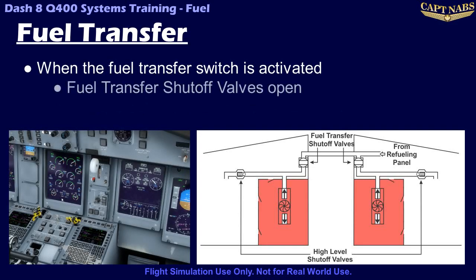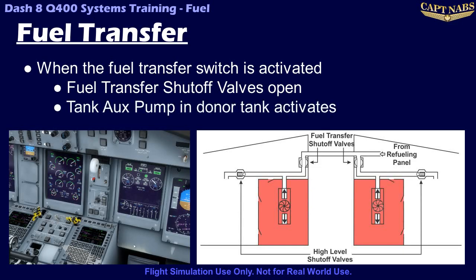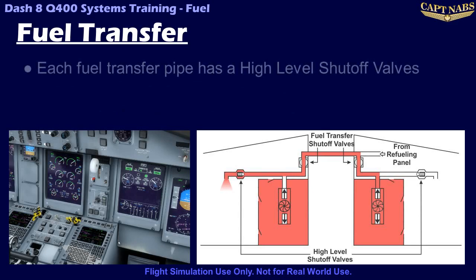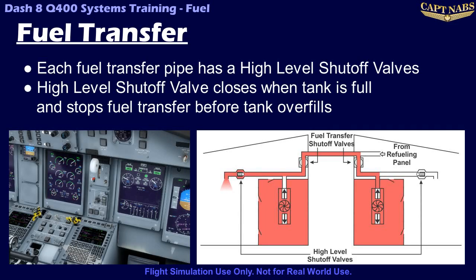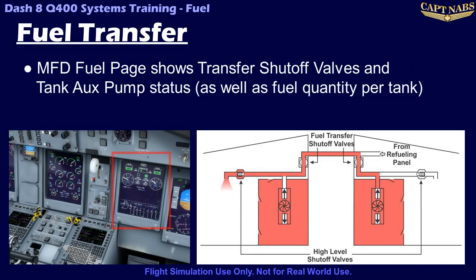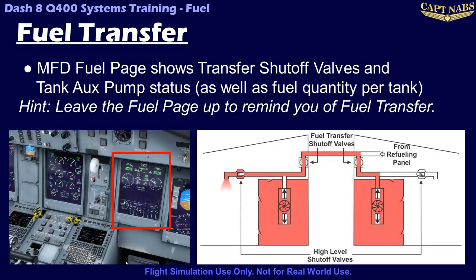When the fuel transfer system is activated using the fuel transfer switch, two fuel transfer shutoff valves open to allow fuel to flow between the tanks. The auxiliary fuel pump on the donor tank is also automatically activated, regardless of the tank aux pump switch position, to force fuel from the donor through to the recipient tank. Note that each fuel transfer pipe also has a separate level control shutoff valve. These valves close when an overfill condition is sensed in the fuel tank, thus terminating a fuel transfer before fuel is vented overboard. The status of the fuel transfer is best monitored on the fuel page of the MFD, where the fuel transfer shutoff valves and tank aux pump status are both indicated.